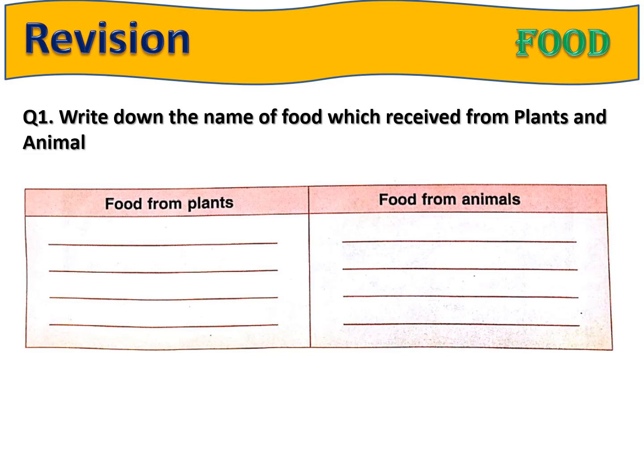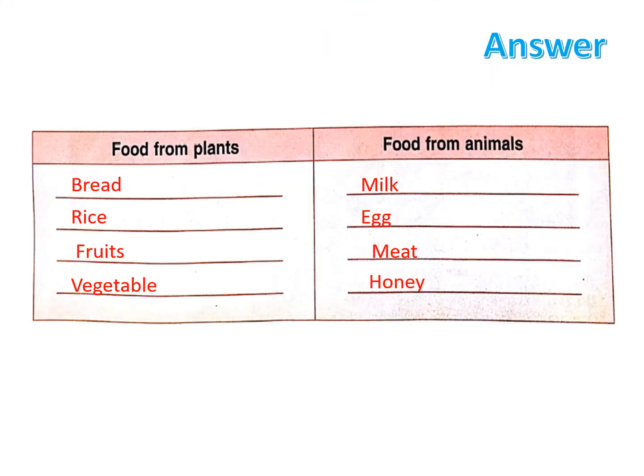Your first question is: write down the name of the food which is received from plants and animals. Columns are given here and you have to write the name of the food which you get from plants and from animals. You can write yourself — the answer is also given. First try to write yourself and then you cross-check it.